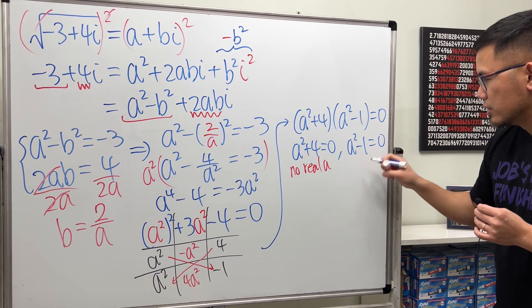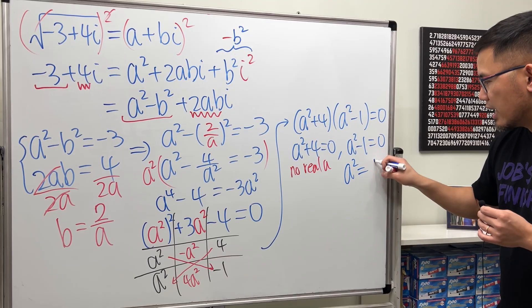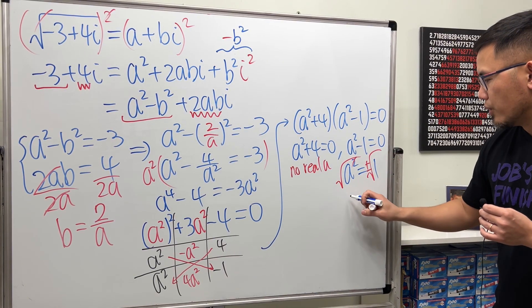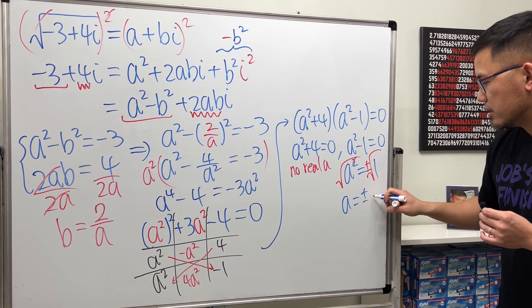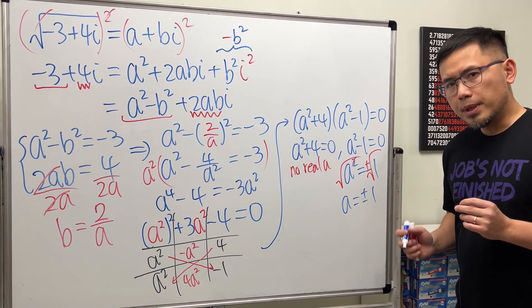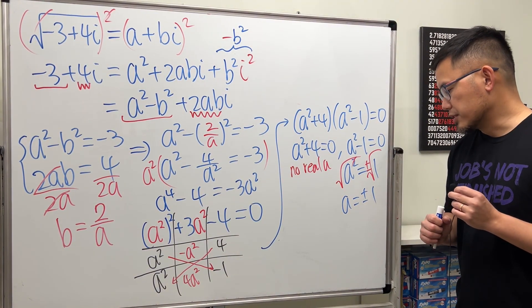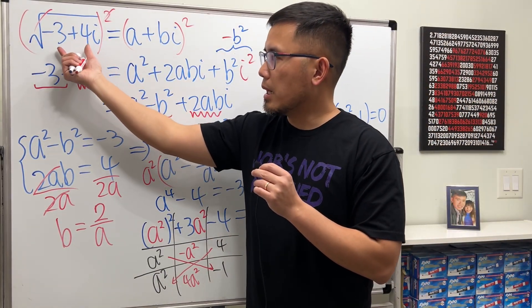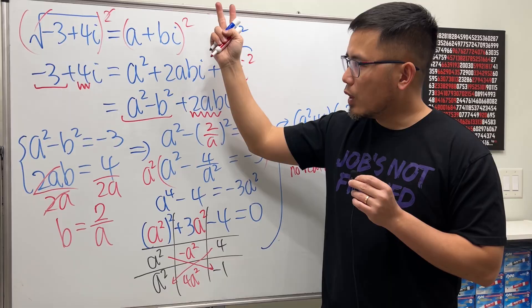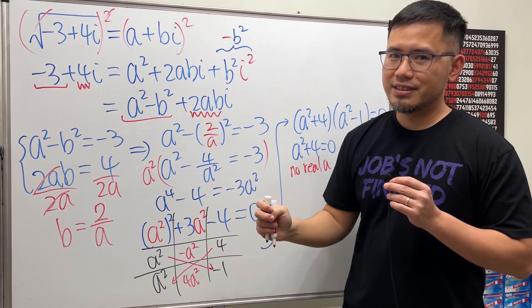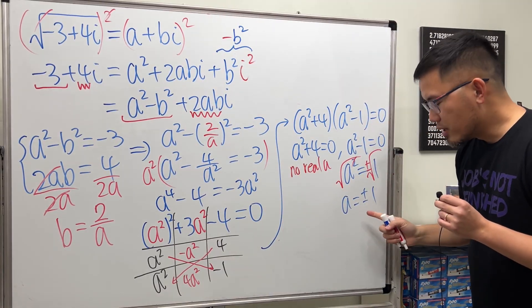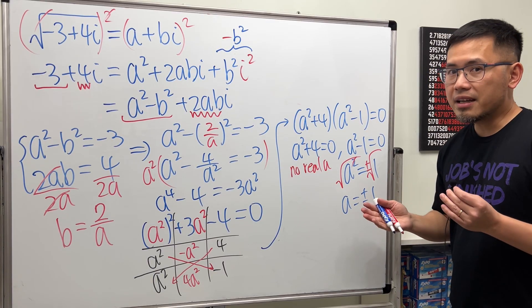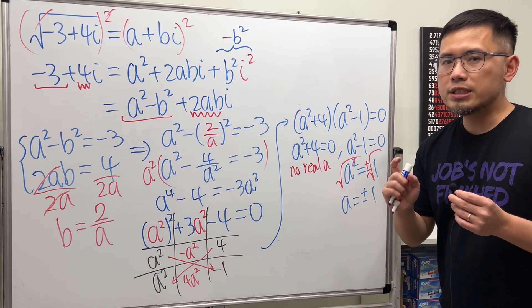From a squared minus 1 equals 0, we get a equals plus or minus 1. We have two choices because the square root of a complex number has two possible answers. Starting with a equals positive 1 gives us the principal square root.